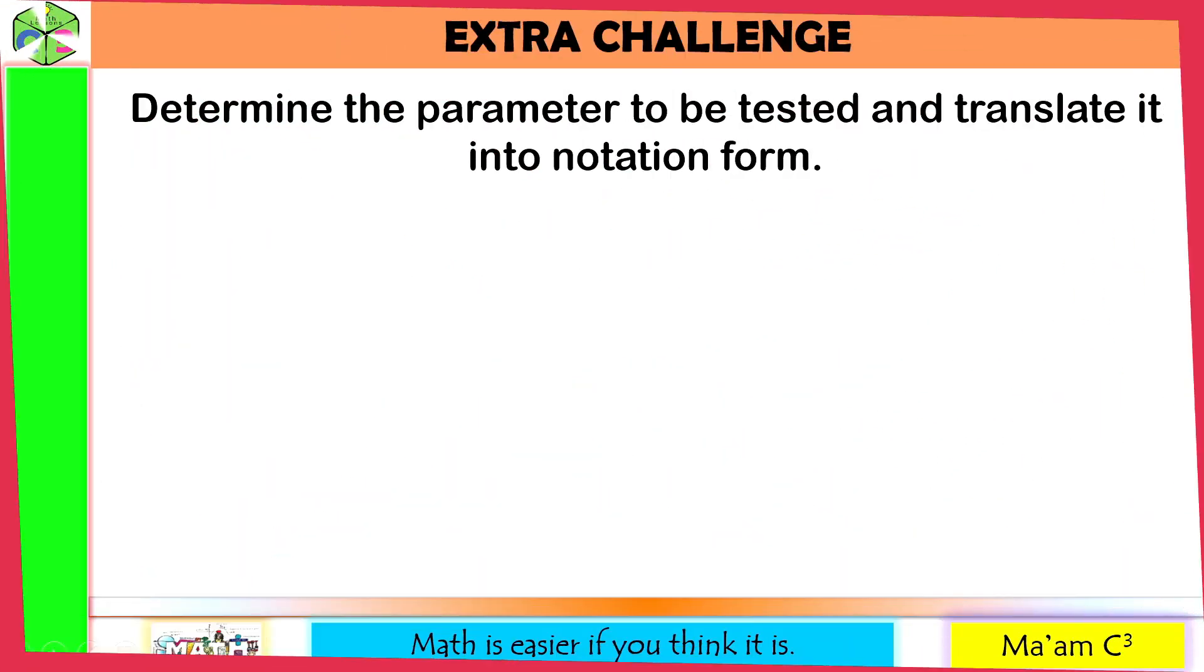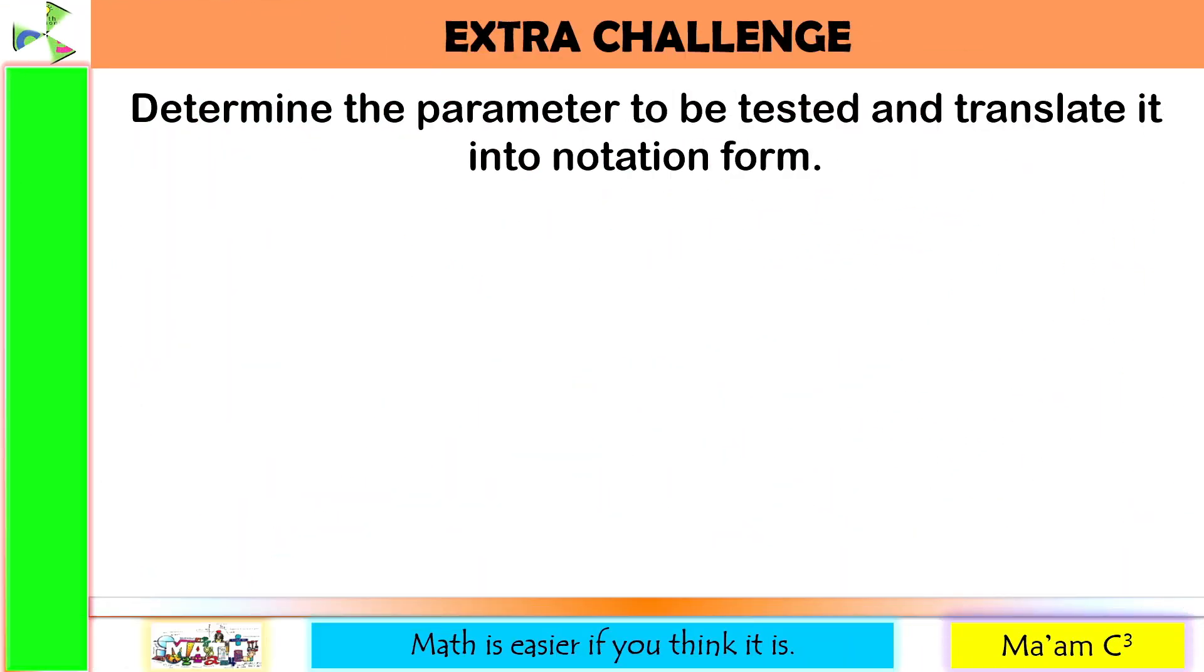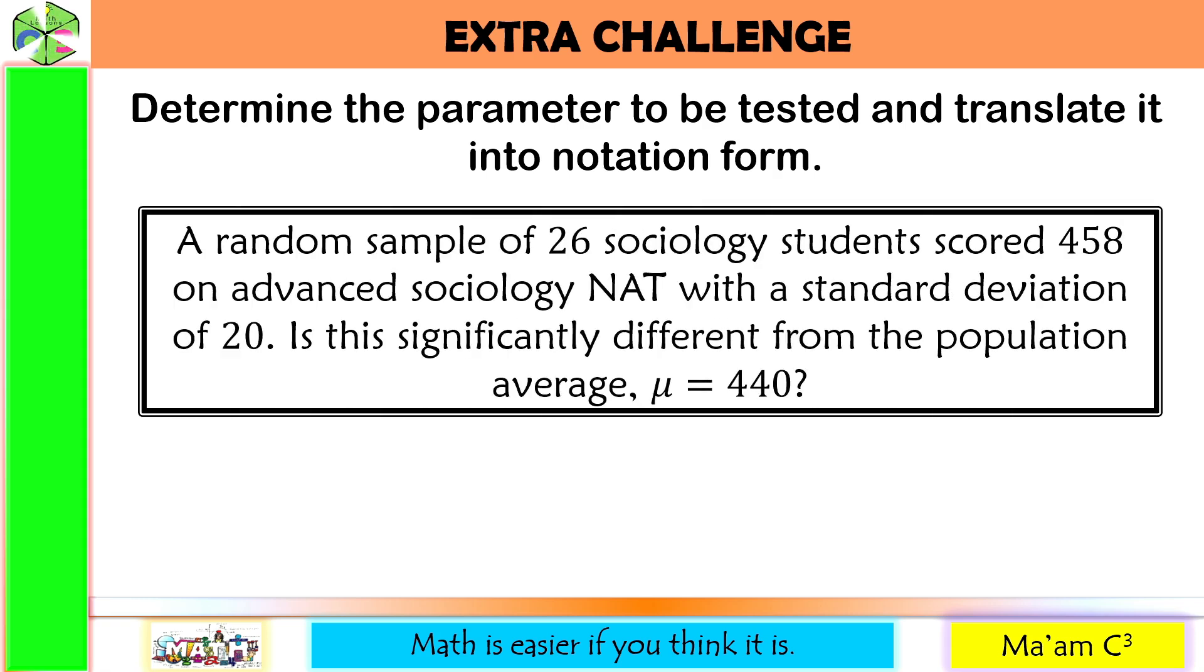Let us do extra challenge. Determine the parameter to be tested and translate it into notation form. A random sample of 26 sociology students is scored 458 on Advanced Sociology National Achievement Test with a standard deviation of 20. Is this significantly different from the population average? Mu is equal to 440?